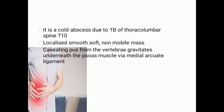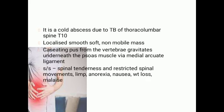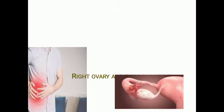Moving on to psoas abscess — it is a cold abscess due to tuberculosis of the thoracolumbar spine at T10. It is a localized, smooth, soft, non-mobile mass. The cascading pus gravitates underneath the psoas muscle via the medial arcuate ligament. Clinical features involve spinal tenderness and restricted spinal movements, lymphadenopathy, anorexia, nausea, weight loss, and malaise, along with right iliac fossa pain.